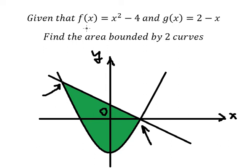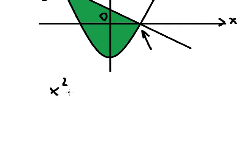To do this, we have x² - 4 equals 2 - x. So I will put everything on the left side.